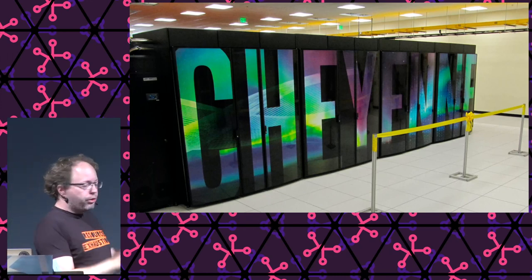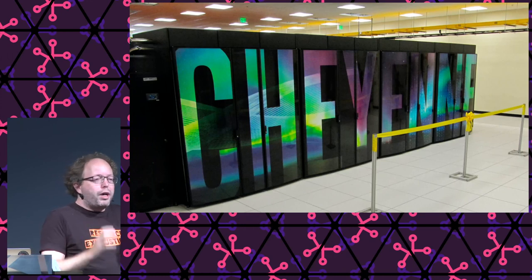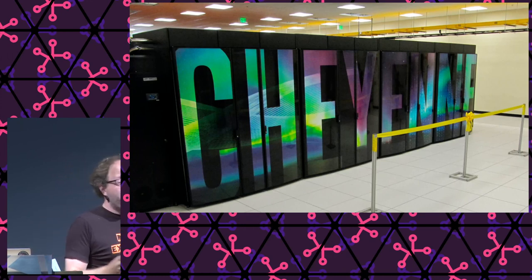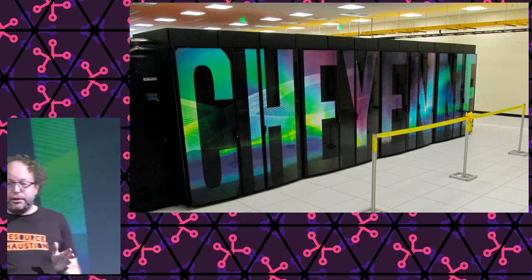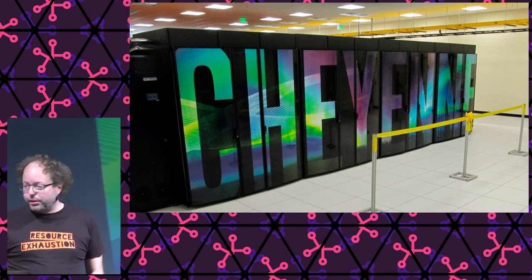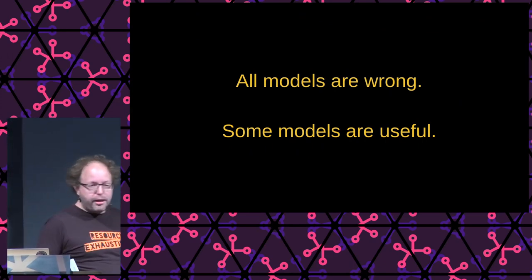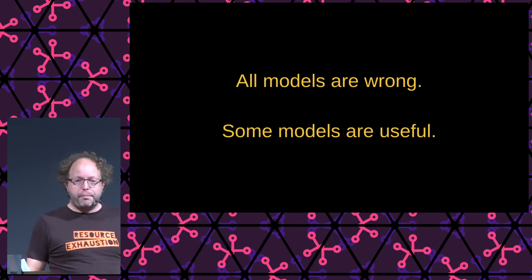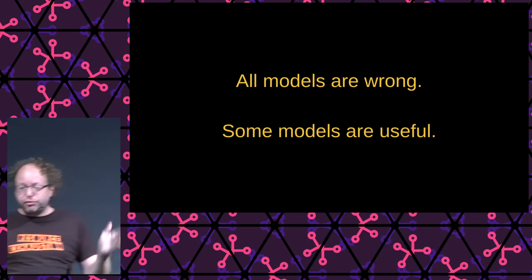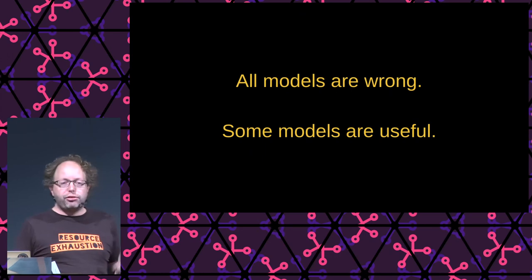I'm going to talk a little bit about how these models work, but I'm also going to talk about why some of these models and a lot of the modeling methods that are used are stuck in the 80s — and that's actually a little bit terrifying. One big note from George Box: all models are wrong, but some models are useful. We want to make use of the fact that some models are useful.